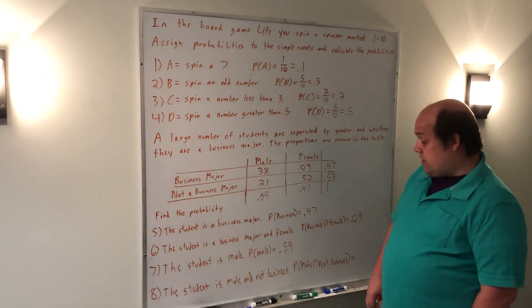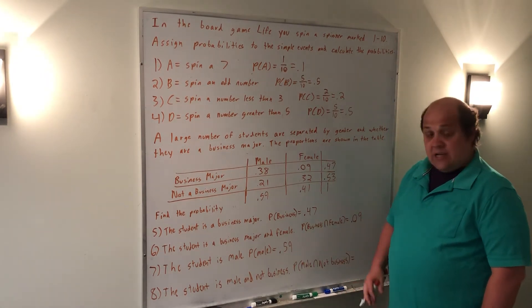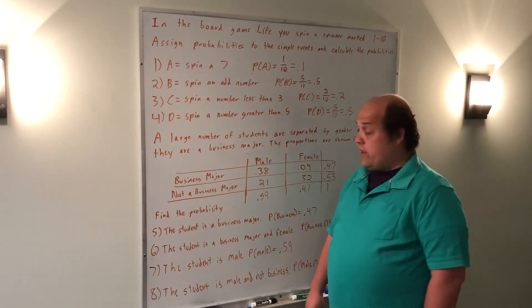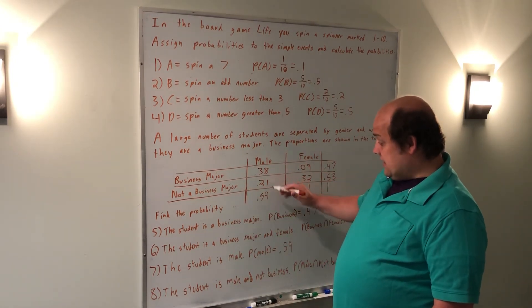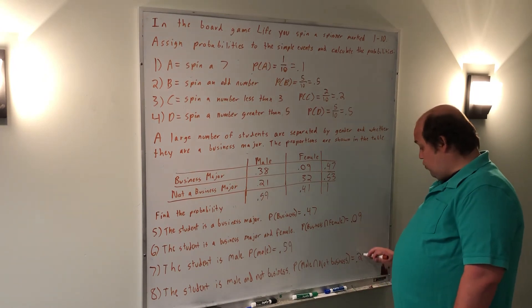Finally, it asks me if the student is male and not a business major. Again, that's a specific cell where they overlap, where male meets not a business major. It's this cell right here that has probability 0.21.